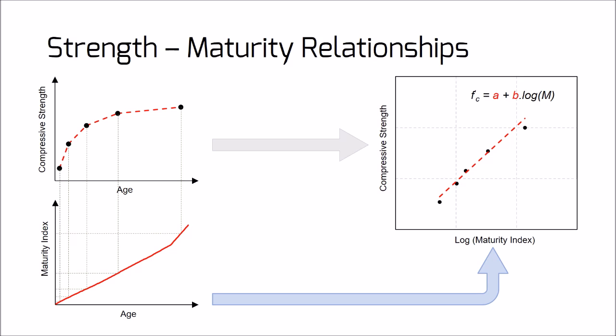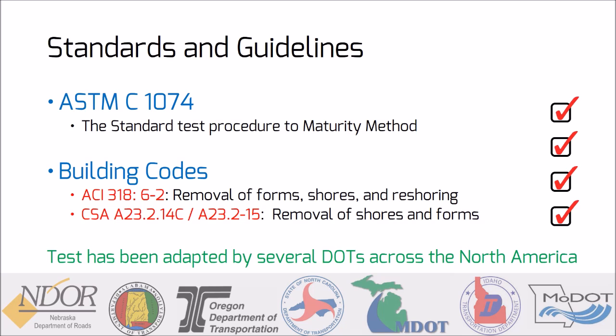In actual practice, one only needs to know the temperature variation history of concrete to predict the compressive strength. ASTM C1074 standardizes the procedure for developing the maturity-to-strength relationship and strength prediction. Several concrete design codes, such as ACI 318 and CSA A23, accept the maturity method as a verified procedure for predicting early age strength, which is particularly useful when determining when to open formworks on a construction site.